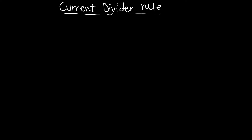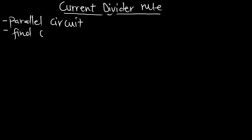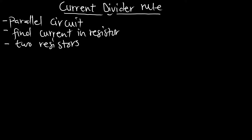In this episode we are going to talk about the current divider rule. We are going to apply this in parallel circuits, so the analysis for current divider is going to be a parallel circuit. We are also going to use it to find currents in resistors, and this episode is also going to focus on two resistors. This current divider rule is applied in parallel circuits and we are going to use it to find the current passing through a particular resistor.